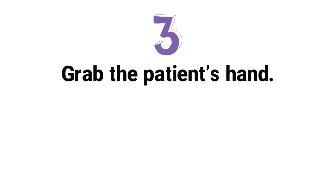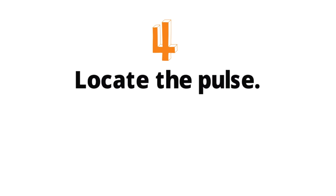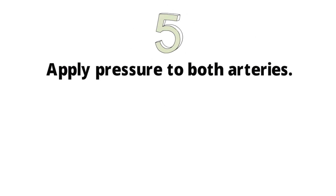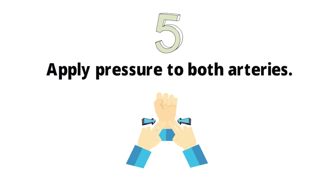Step 3: Grab the patient's hand. Using your right hand, slowly grab your patient's left hand. You can also use your left hand to grab your patient's right hand, depending on your preference. Step 4: Locate the pulse. Place your middle finger on top of the radial pulse and your pointer finger on the ulnar pulse of the patient. Step 5: Apply pressure to both arteries. When the pulses can be felt, apply occlusive pressure to both the ulnar and radial arteries to temporarily stop blood circulation of the hand. Be sure to tell the patient to relax his or her hand while doing this.